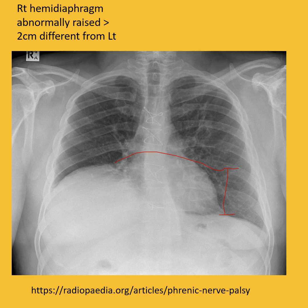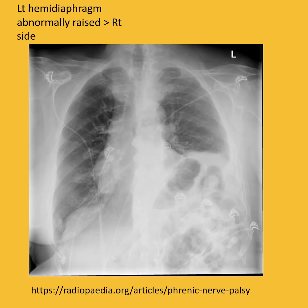If there is an abnormally raised right diaphragm beyond two centimeters, that's a red flag. On the left side, if the left diaphragm is higher than the right, it may indicate left-sided diaphragmatic paralysis, or it could be something else like a subphrenic effusion. So you need to be careful in your interpretation.